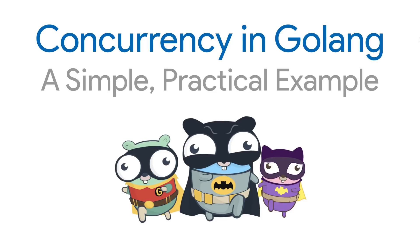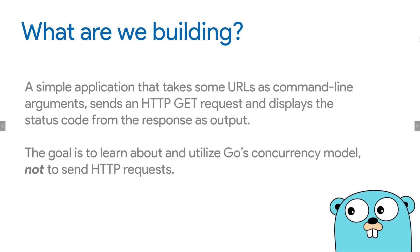Hey guys, this is Rohit, and today we'll be writing a simple but practical application using Go, which will help us demonstrate where and how we can use some of the concurrency features that are part of the language. This will make our application faster and much more efficient. What we are building is a command line application — it will take some URLs as command line arguments, send GET requests to all of them, and display the status code from the response as output.